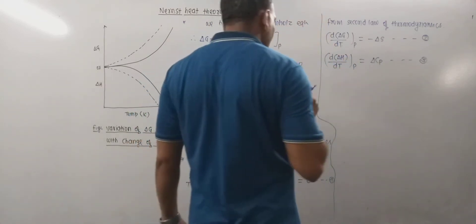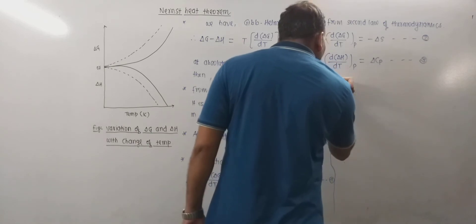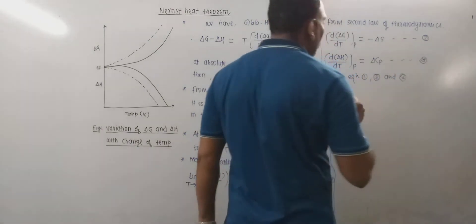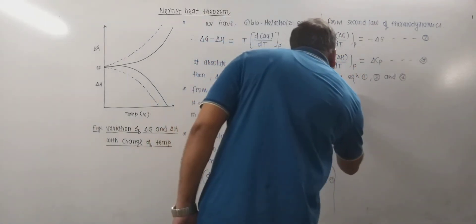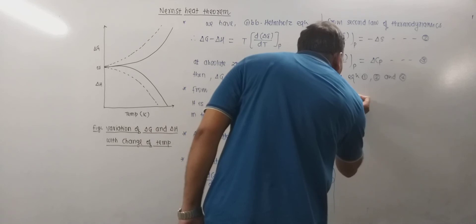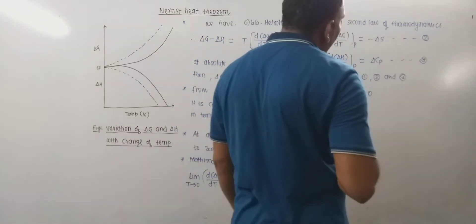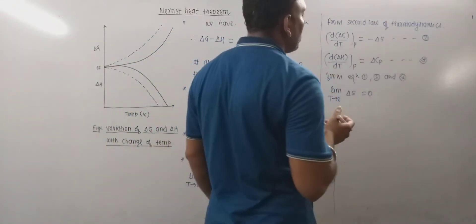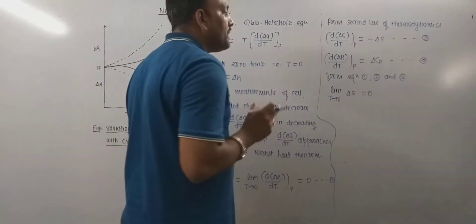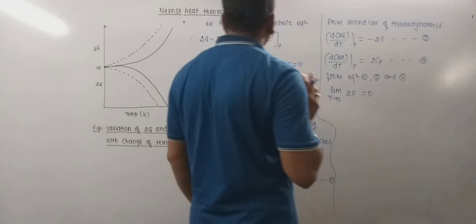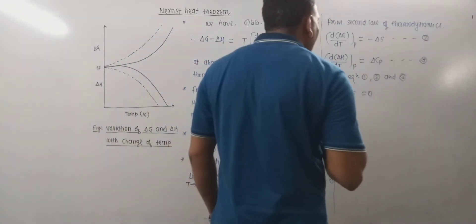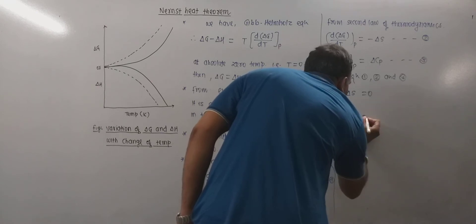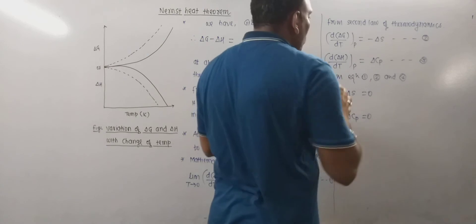From equations one, two, and three, one can write: limit T→0 of ΔS equals zero. This means that as temperature decreases, entropy goes on decreasing, and at absolute zero the entropy change is zero — but only if the solid is extremely pure. Remember, Nernst Heat Theorem holds good only for pure solids. Similarly, limit T→0 of ΔCp also equals zero.